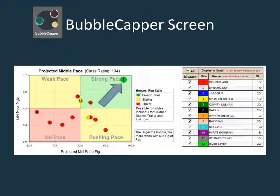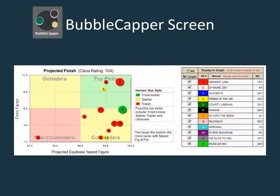Midnight Aria clearly maintains his advantage at the second call. The finish of the race looks highly contentious, with all but one bubble in the top picks and contenders quadrants, with Midnight Aria barely holding on with the highest projected Equibase speed figure. This is where pace analysis comes into play. Since the number one looks to have such a clear lead in the early and middle stages, it has to be considered a key play due to such a pace advantage. Lone front runners always need to be examined to see if they have the potential to run a big race.